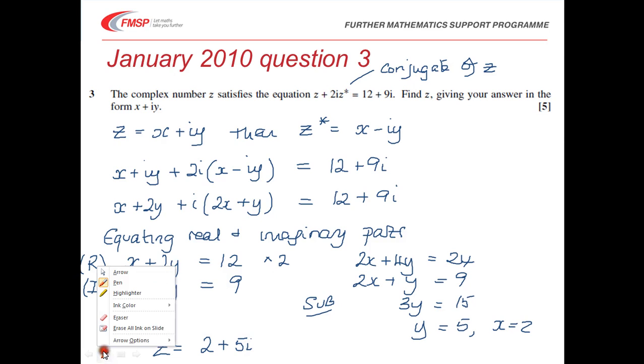So if we just have a quick look at how we award the marks for this, then there is one mark just for writing down the conjugate, and that's a B1 mark. There's a method mark for equating real and imaginary parts. You then have an accuracy mark for getting these two equations written down carefully and correctly. And we have a method mark for solving those equations and an accuracy mark for getting it all correct and writing it in the right form. So 5 marks for the question.